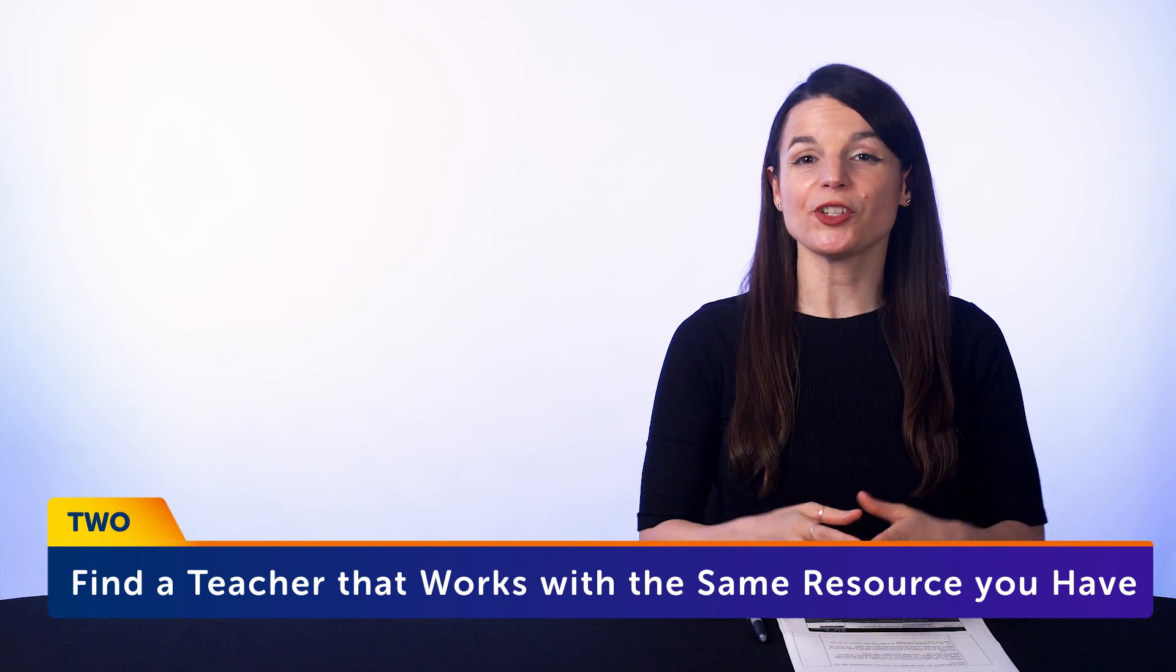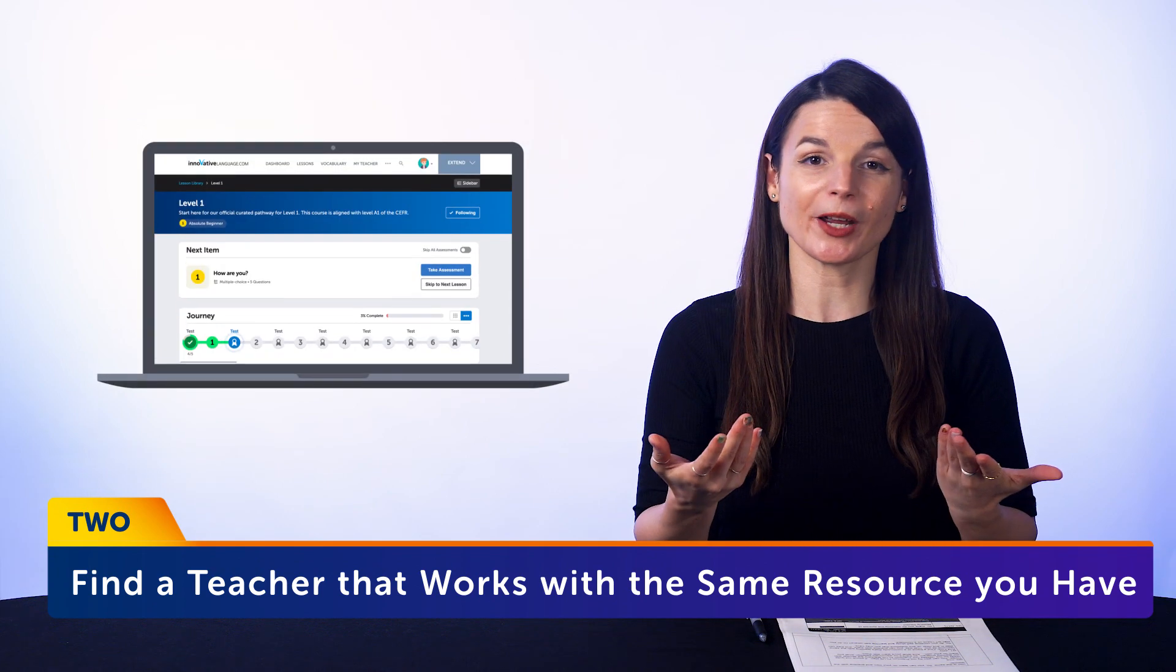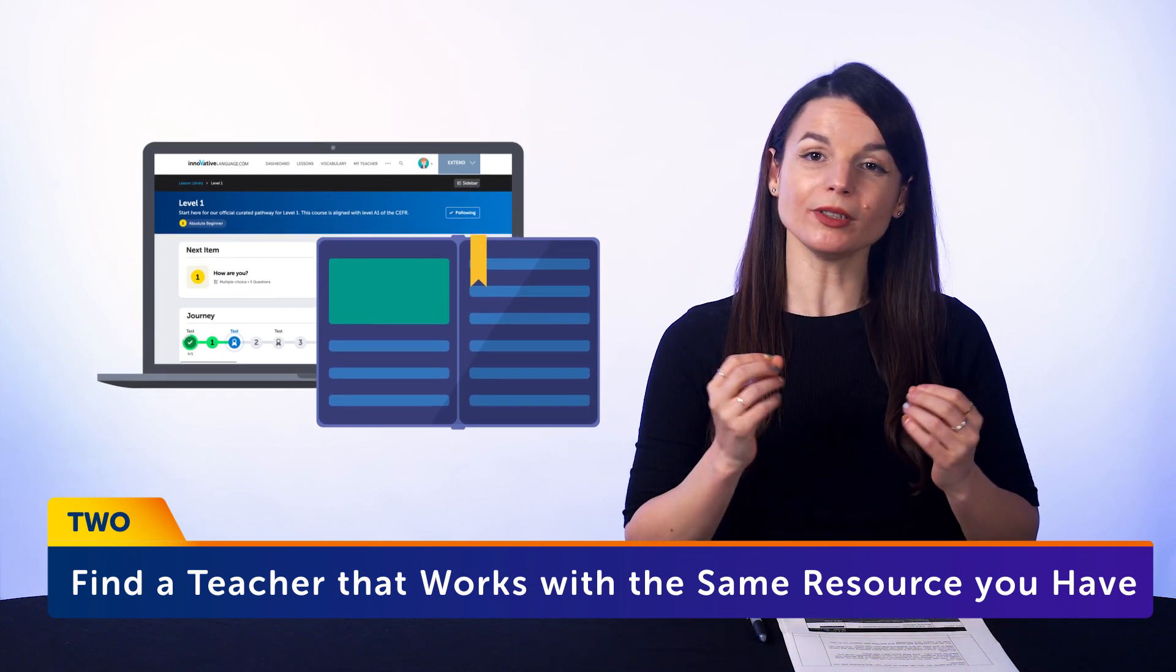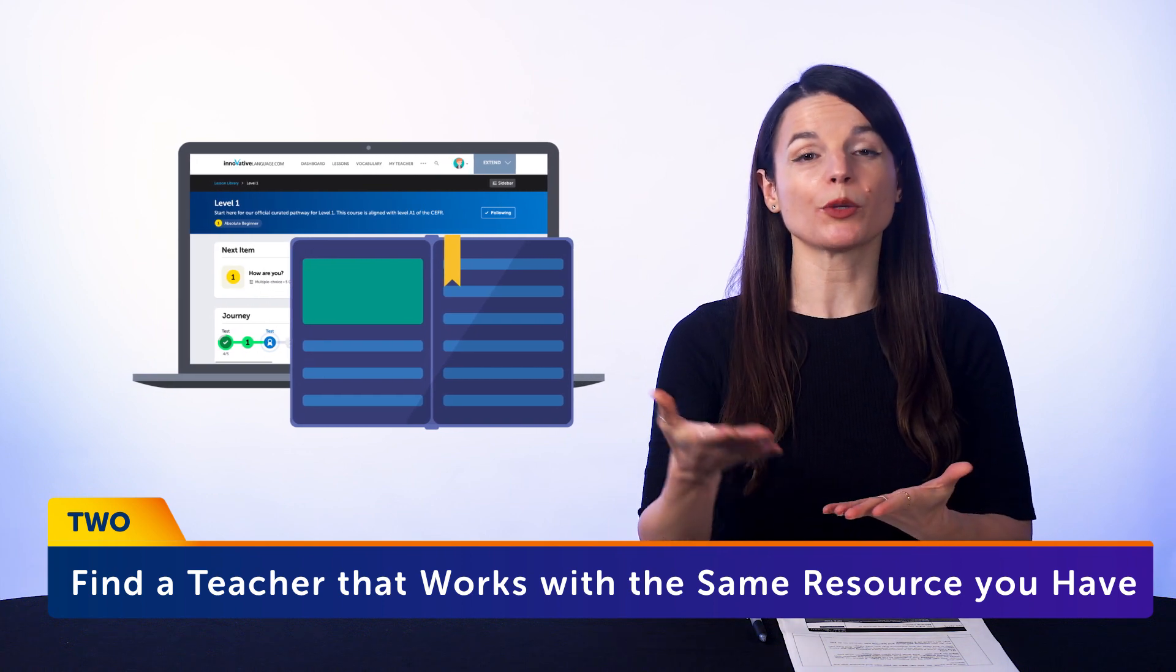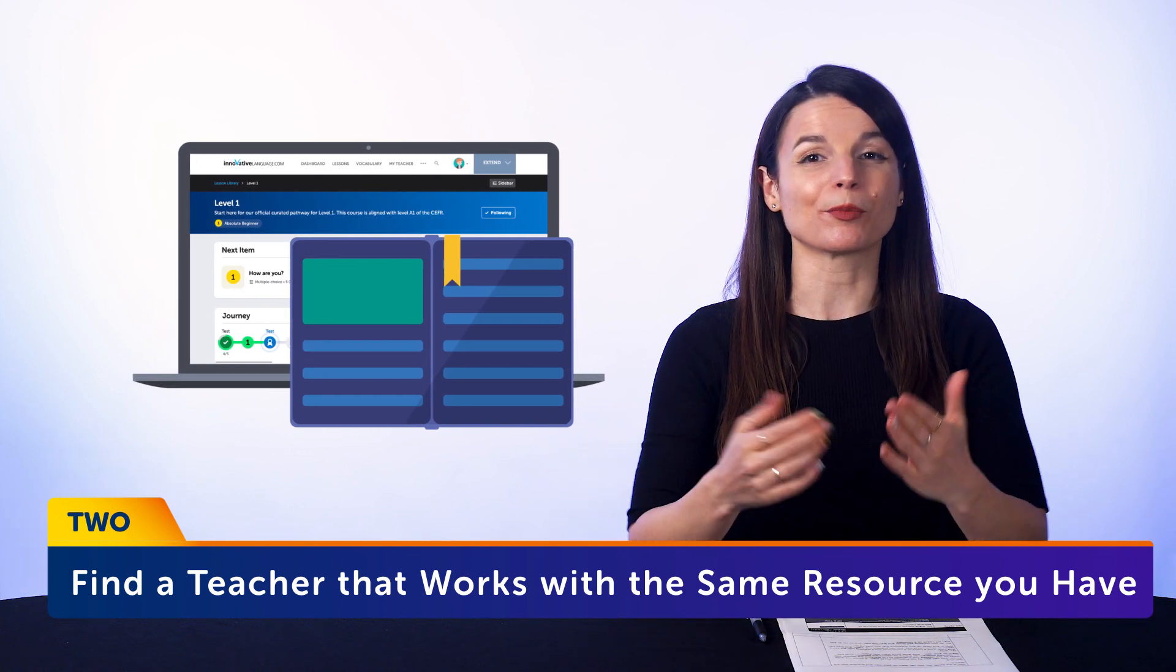2. Find a teacher or tutor that works with the same resource that you have, whether it's our program or a textbook. Have the tutor see what you're studying so they can match. And it's important that there's overlap—that what you're learning with the tutor and on your own is the same, so you can learn on your own and practice with the teacher.